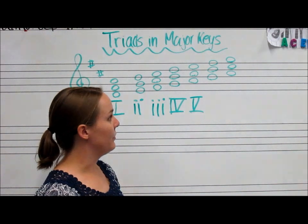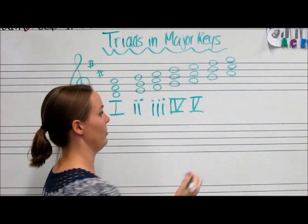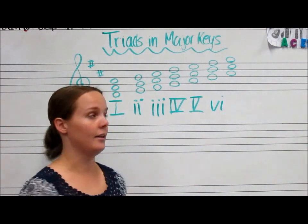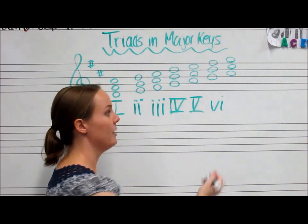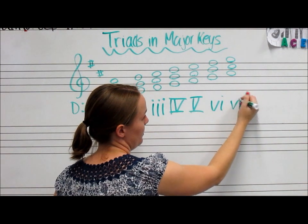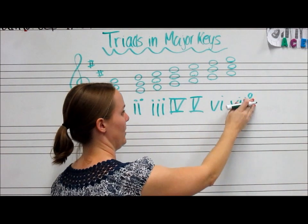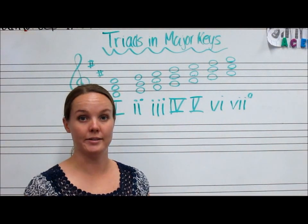B, D, F sharp is a Roman numeral vi, lowercase. And then C sharp, E, G is going to be a diminished triad. So that will be lowercase vii with that little diminished symbol right next to it, that degree sign. That's going to show that it's a diminished chord.